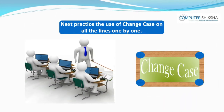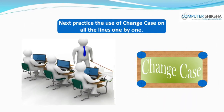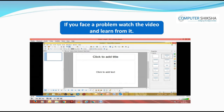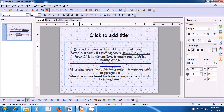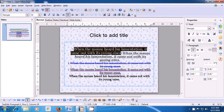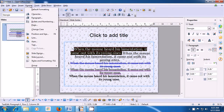Next, practice the use of Change Case on all the lines one by one. If you face a problem, watch the video and learn from it. With the help of this video, we will now practice the use of the Change Case option of the Format menu. To change the case, first select the line on which you want to apply it. We are going to apply small letters first. Take the pointer to the Format option of the menu bar, click there, and then bring the pointer to Change Case.